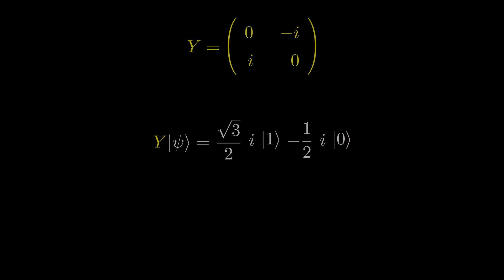With this, pause the video and prove that applying a Z gate to a qubit in the state alpha 0 plus beta 1 gives us the state alpha 0 minus beta 1.